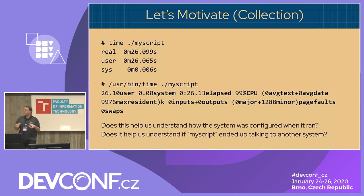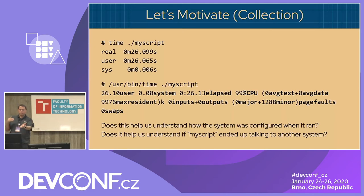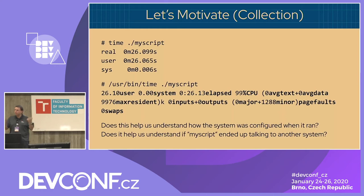This is nice, but it doesn't help you on a distributed system with multiple systems, and it's not going to help you understand how your system was configured, because the time command tells you what happened but not the context. For instance, I used 9,976 pages of memory — but of what? Was that of 100 million gigabytes or one gigabyte? We have no reference point. We have no idea what the configuration is, and it doesn't help us with multiple systems.